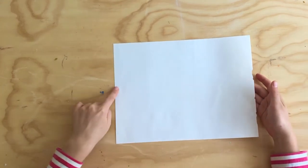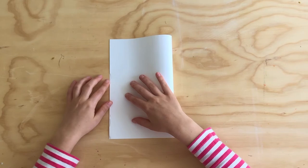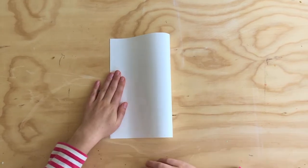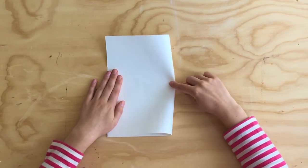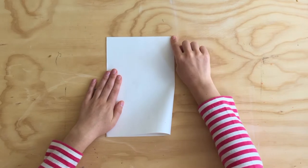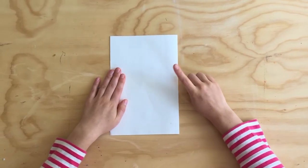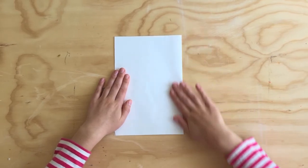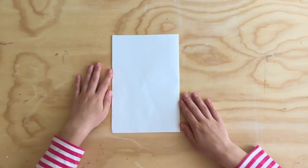So the two short edges are coming to meet. I'm gonna hold it in place with one hand, and then to crease my fold I like to take one finger and press in the middle, and then I push all the way up and pull all the way down. But if it's too difficult with just one finger, you can also use your whole hand. Okay, that was our first fold.